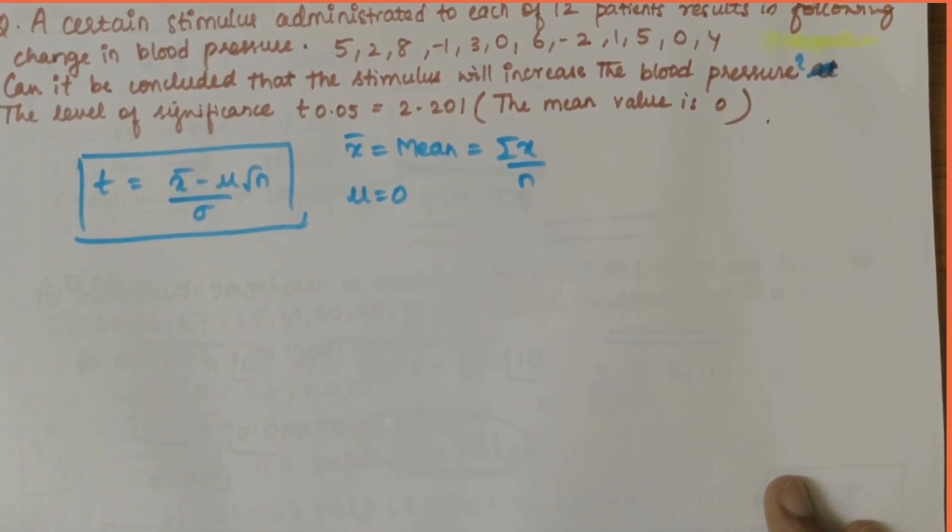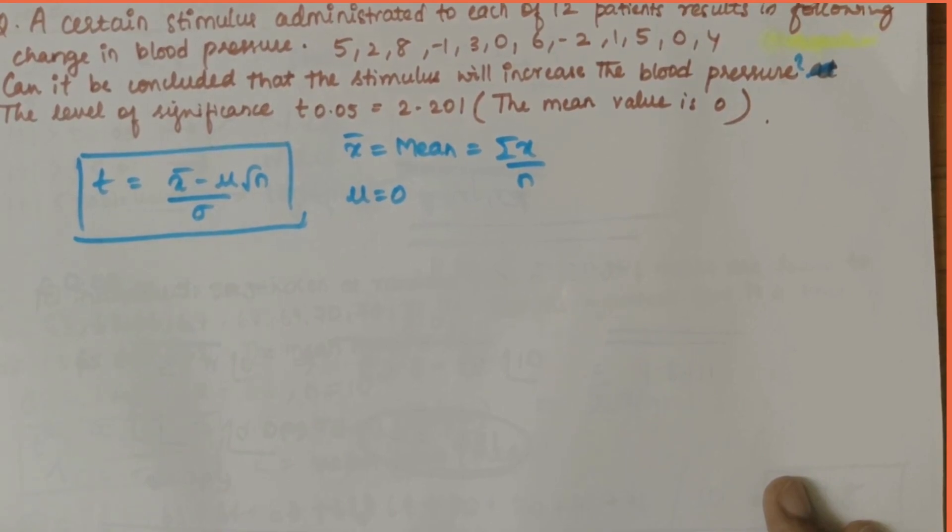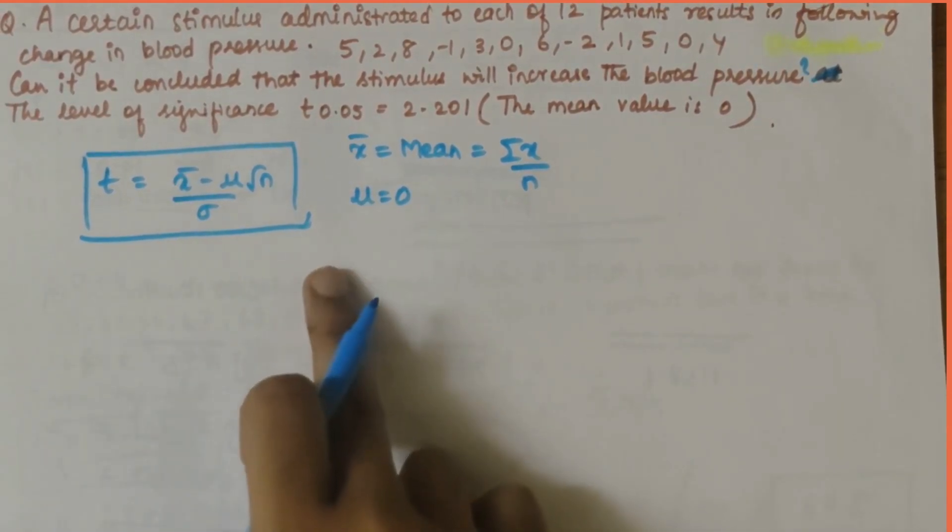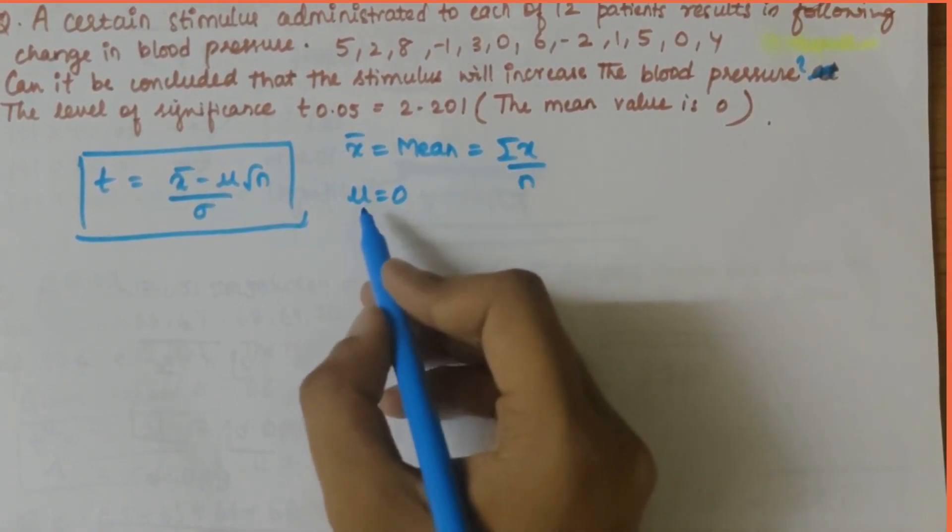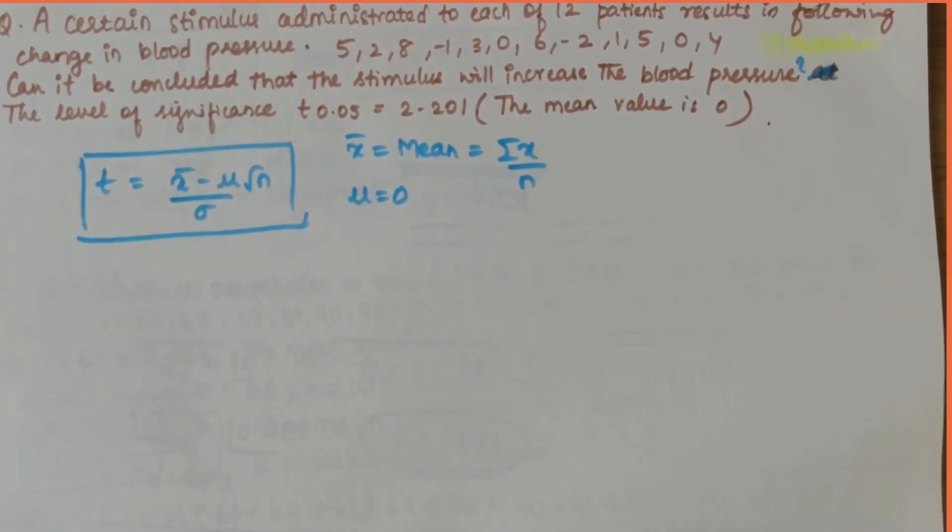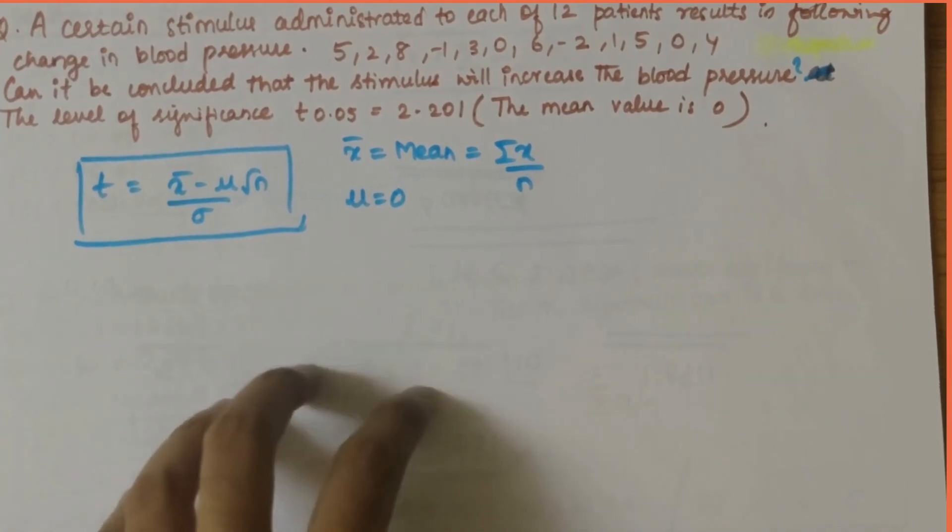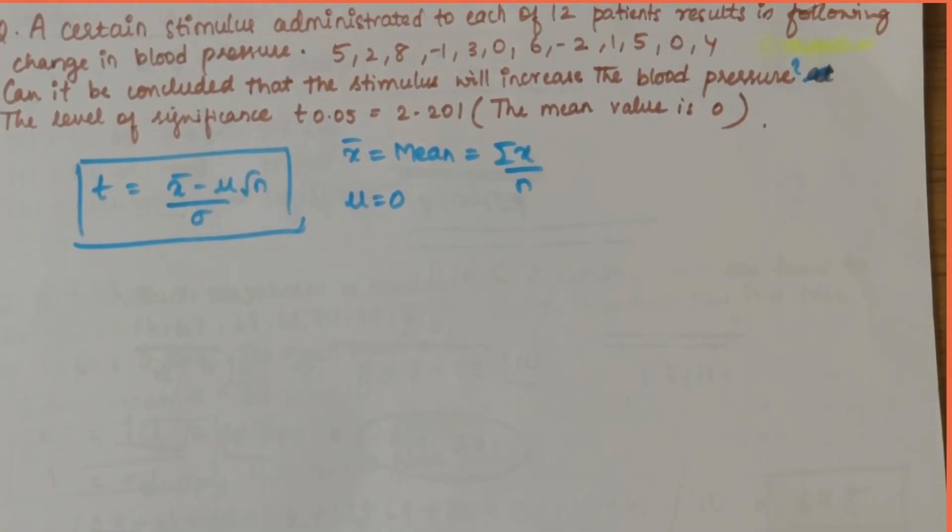For reference, the level of significance t of 0.05 is 2.201 at 11 degrees of freedom. First, let's write the t-distribution formula. Then, x bar value, we know that is mean, is summation of x by n. Mu value is not given, so in this particular question we are taking mu value as 0.